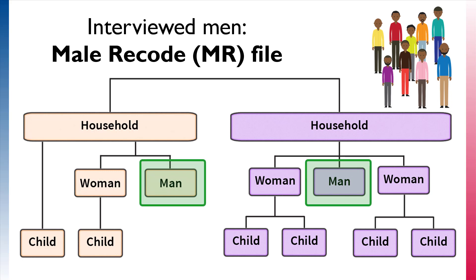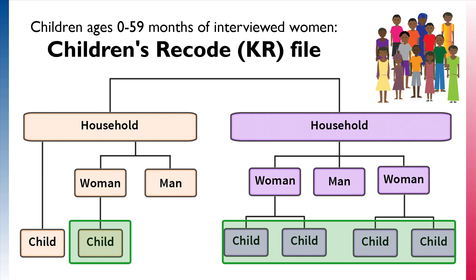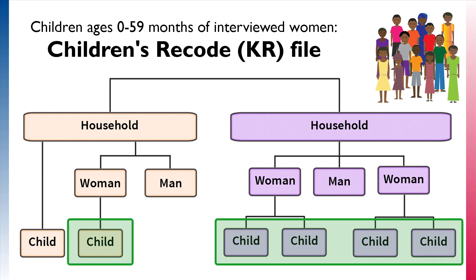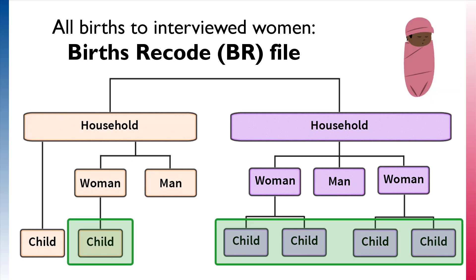In the Men's Recode file, the unit of analysis is men. In the Children's Recode, or KR file, the unit of analysis is children under age 5 whose mothers were interviewed. Much of the information collected about children is only collected for children under age 5, so DHS makes a Birth Recode to capture information about all live births. The Birth Recode, or BR file, contains data for every child ever born to an interviewed woman, up to 20 births.